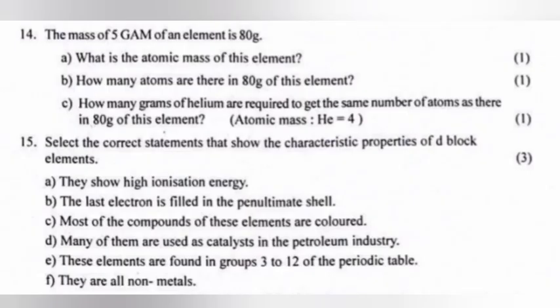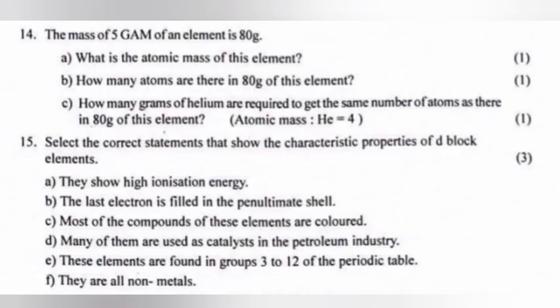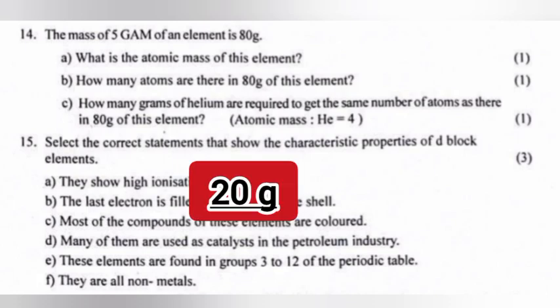Question 14: The mass of 5 gram atom of an element is 80 gram. 14a: What is the atomic mass of this element? Answer: 16. 14b: How many atoms are there in 80 gram of this element? Answer: 5 x Na. 14c: How many grams of helium are required to get the same number of atoms as there in 80 gram of this element? Answer: 20 gram.